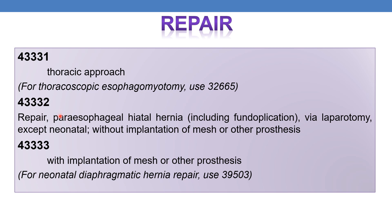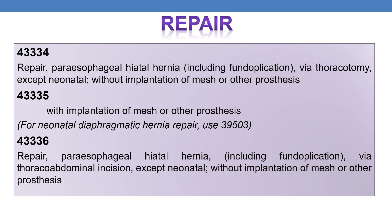CPT 43332 is repair of paraesophageal hiatal hernia including fundoplication via laparotomy, except neonatal, without implantation of mesh or other prostheses. If performed with implantation of mesh or other prostheses, use 43333. For neonatal diaphragmatic hernia repair, use CPT 39503. CPT 43334 is repair of paraesophageal hiatal hernia including fundoplication via thoracotomy, except neonatal, without implantation of mesh. If performed with implantation of mesh, the CPT is 43335. For neonatal diaphragmatic hernia repair, use 39503.